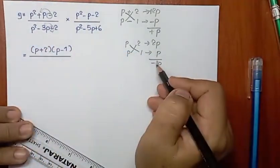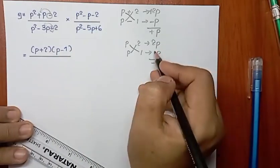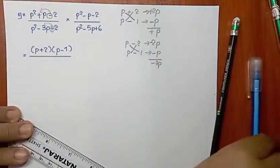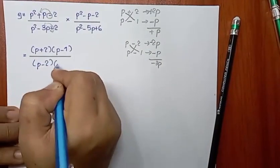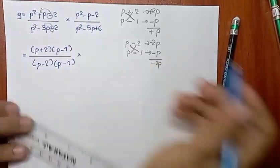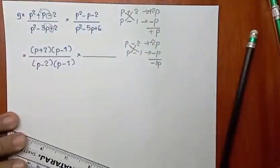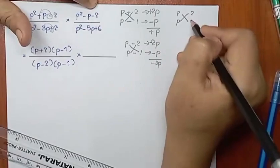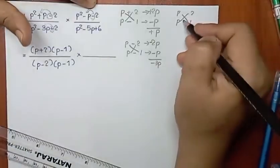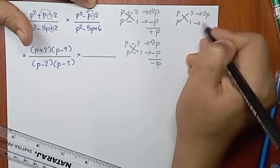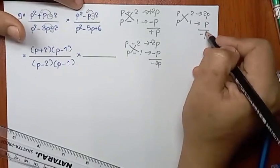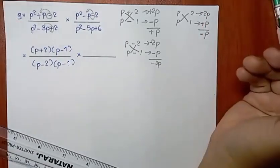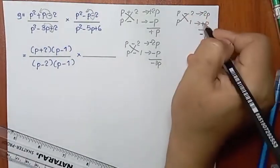We have minus 2p. B minus 2. So, B minus 1. And we have minus 2p. We have minus 1p. If we have minus 1p, we can't. So we have minus 1p.